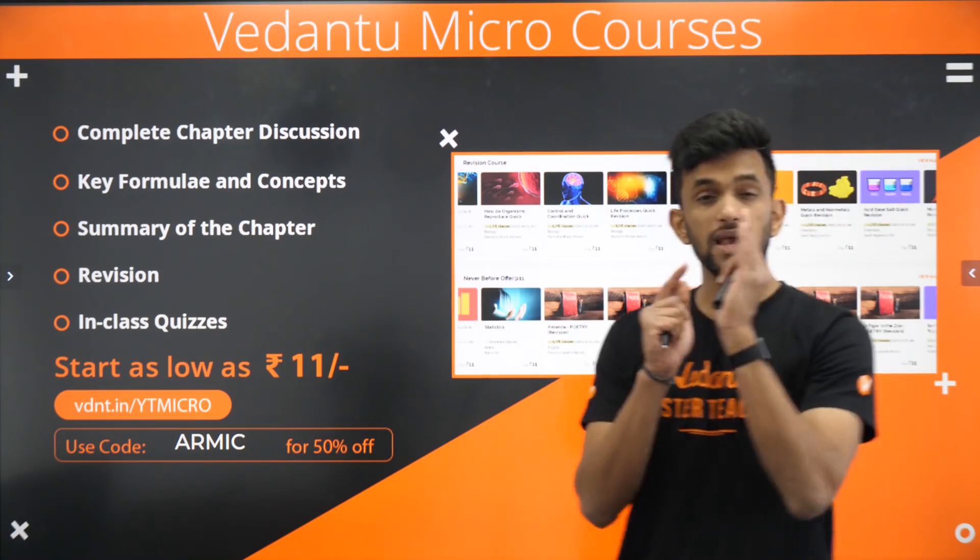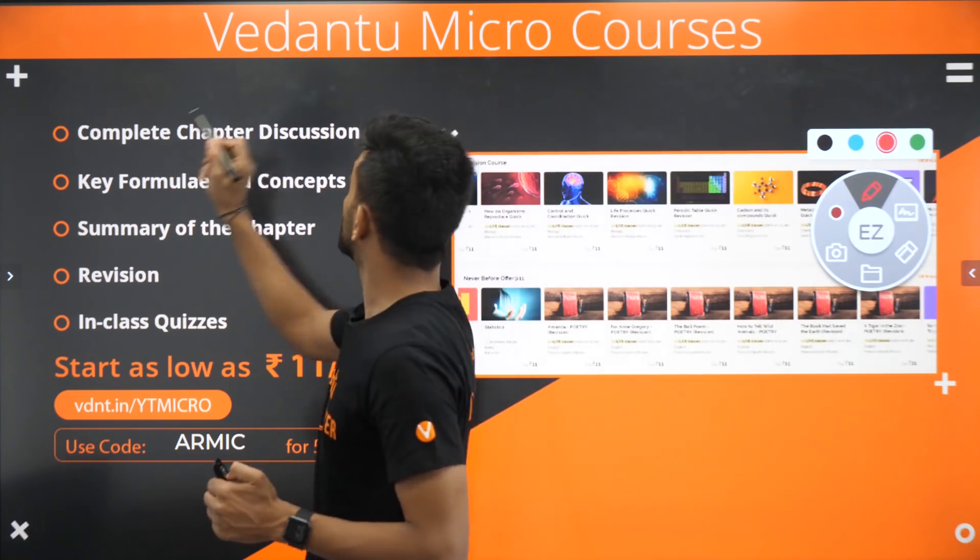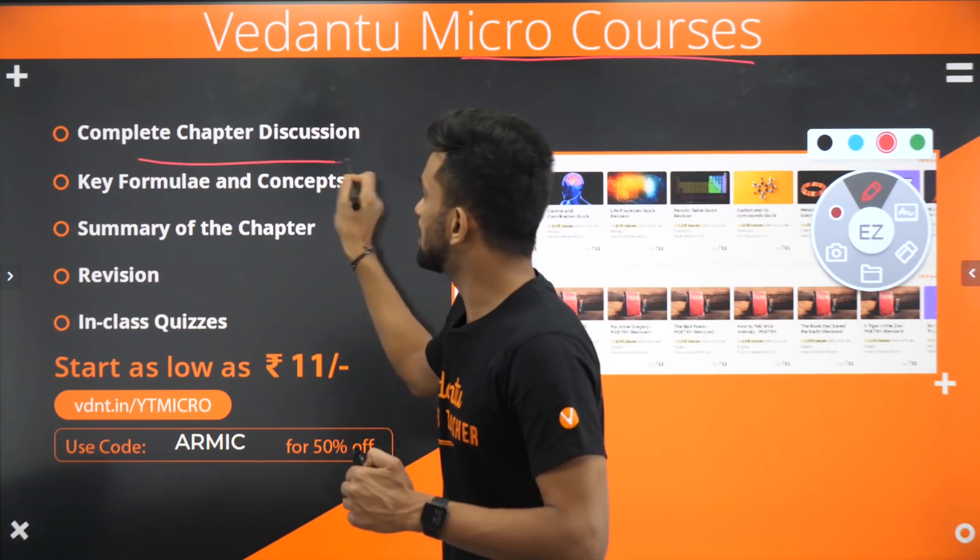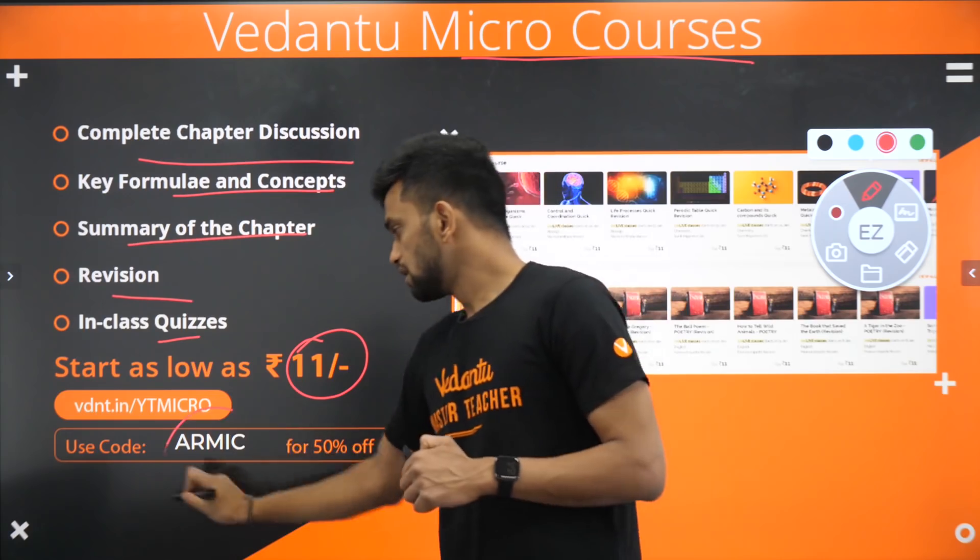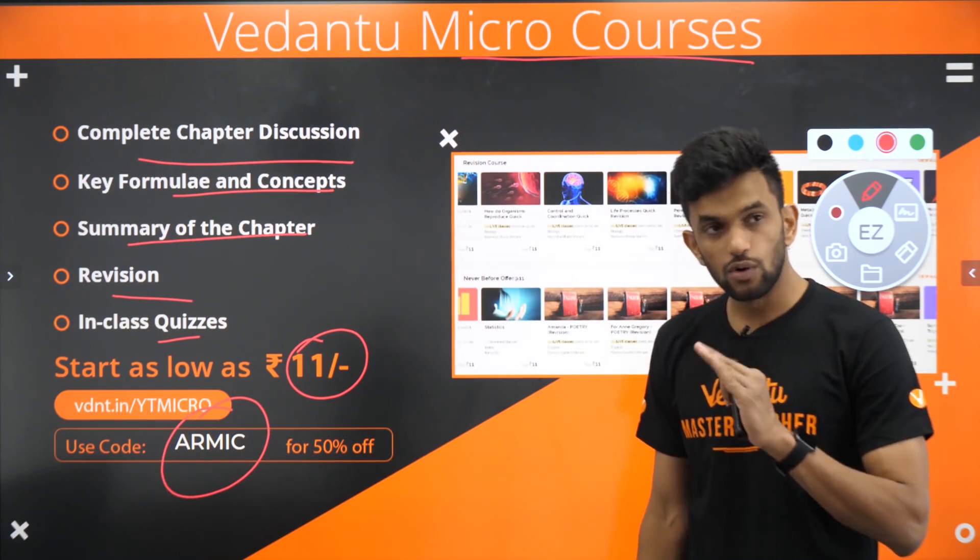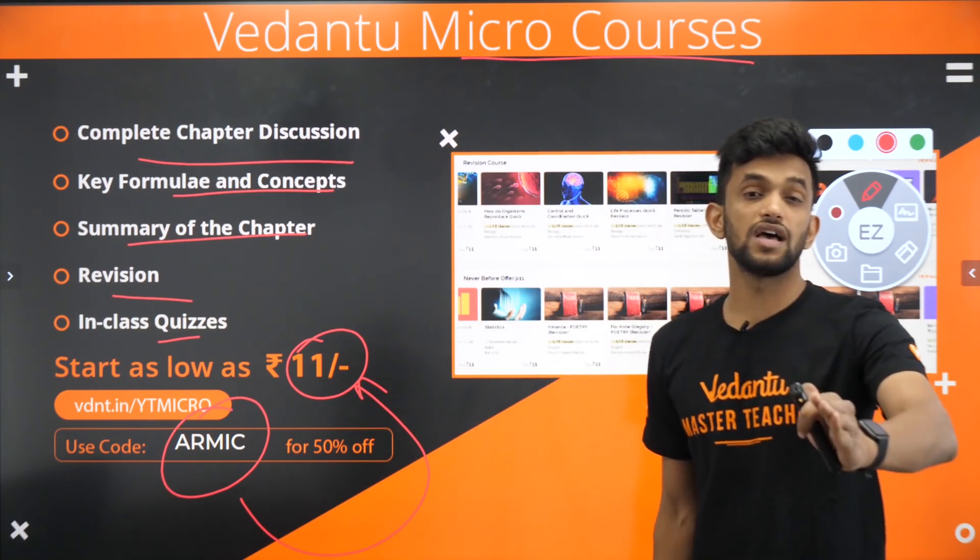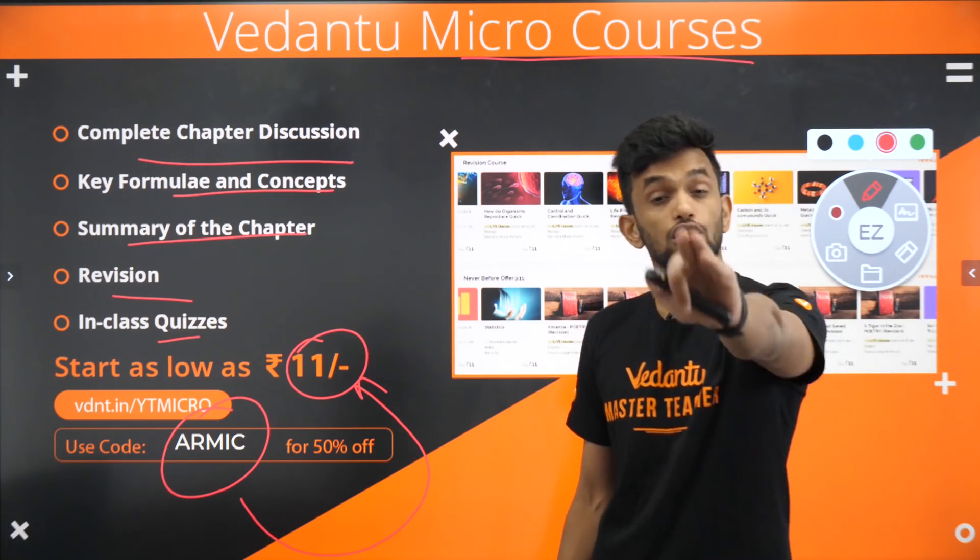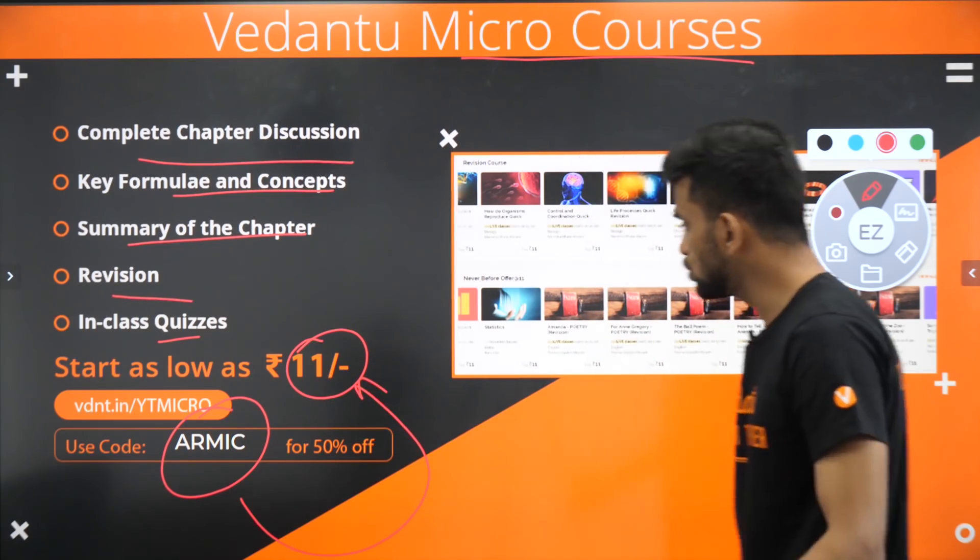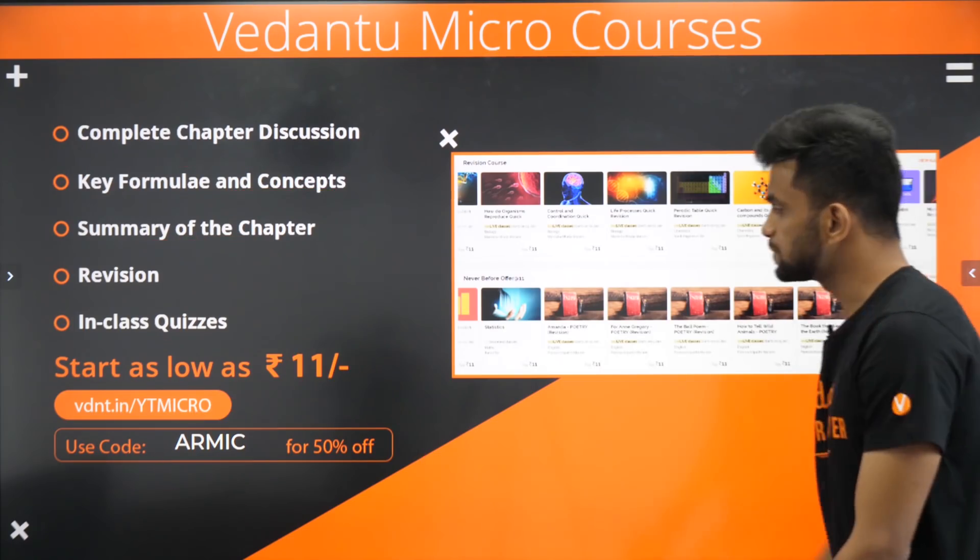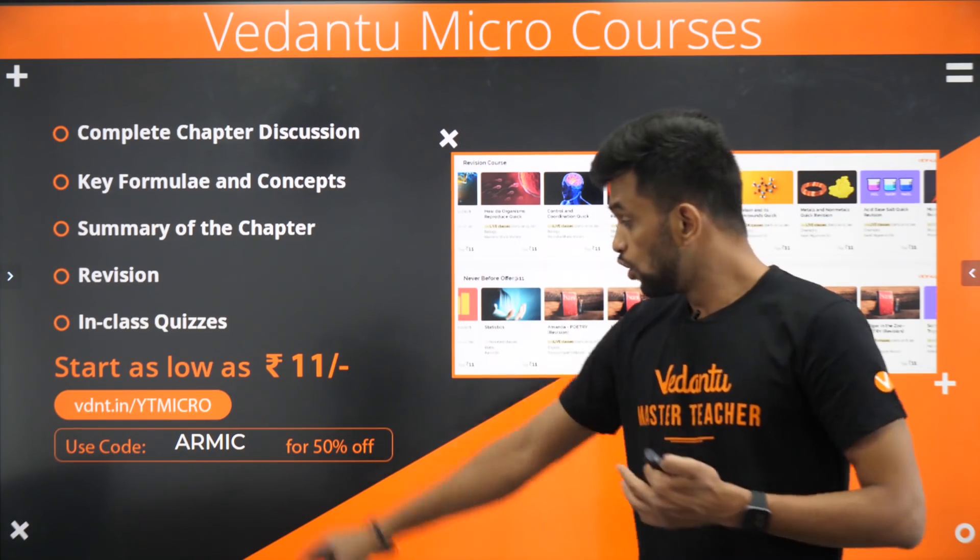We have an amazing fast track micro course with complete chapter discussion, key formulas, concept summary, revision, and in-class quizzes for just 11 rupees. Use this code ARMIC. There's nothing to think about, just take it. It will be beneficial. Those of you who are watching this, I want all of you to take this. You'll get 50% off, making it just 5 rupees. Use the code.